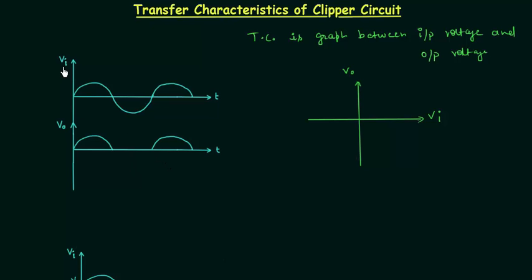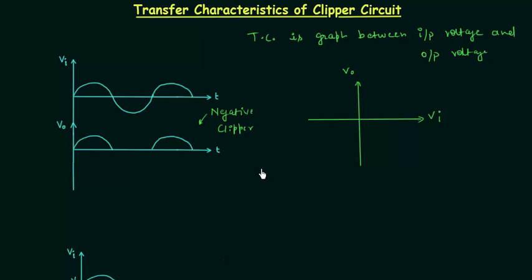We have to find out transfer characteristics for this plot. Here VI is the input voltage and we have the sinusoidal waveform for the input voltage. VO is the output voltage, and you can see the negative half of the input waveform is clipped in the output waveform, so this is the waveform of a negative clipper. We have to find out the transfer characteristics for this.